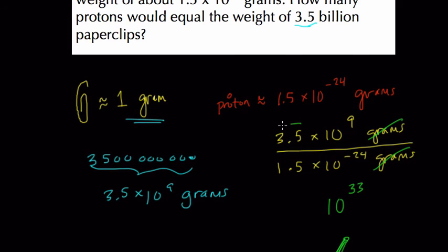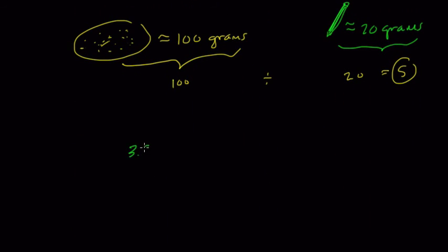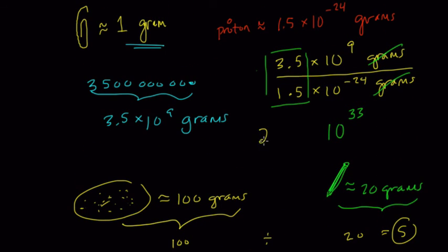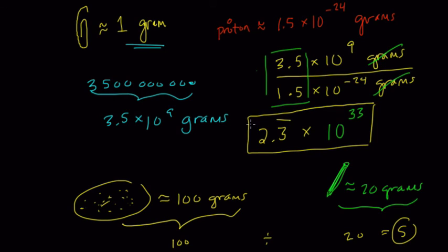Our last division step is 3.5 divided by 1.5. Think of it as an equivalent fraction: 3.5 over 1.5. Multiply both by 2 to get 7 over 3. 3 goes into 7 two times with a remainder of 1, so it's 2 and one-third, which is 2.3 repeating. So our final answer in scientific notation is 2.3 times 10 to the 33rd protons to equal that weight.